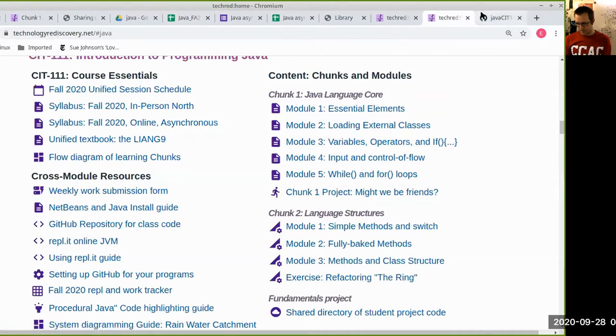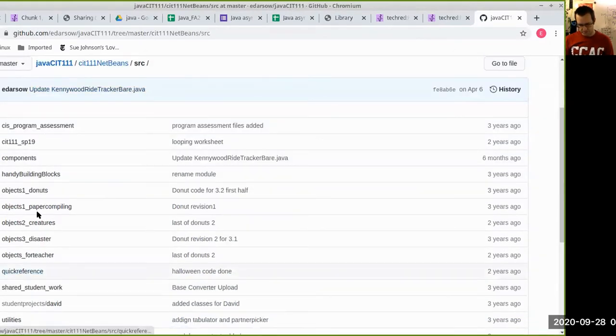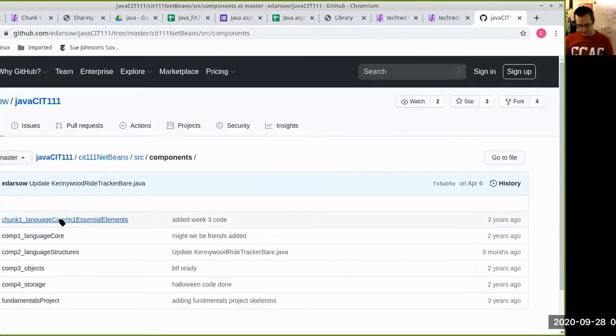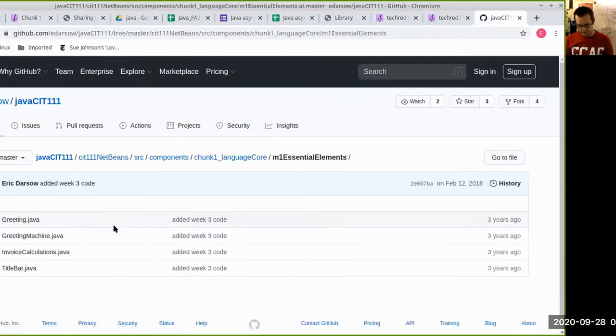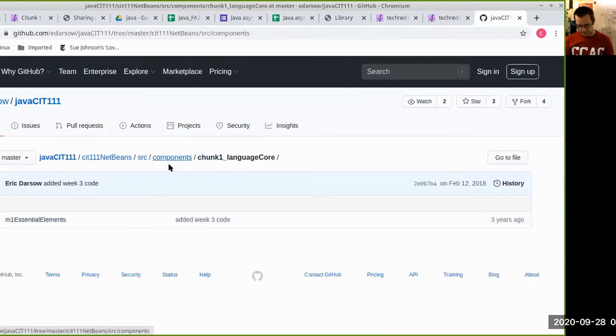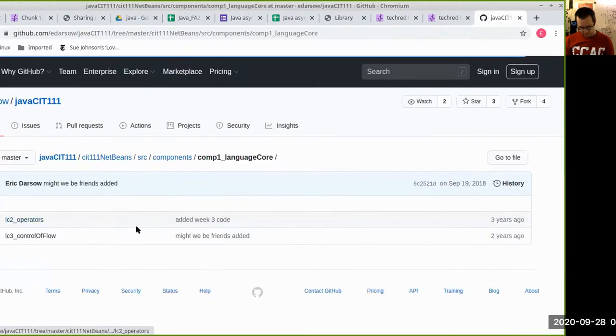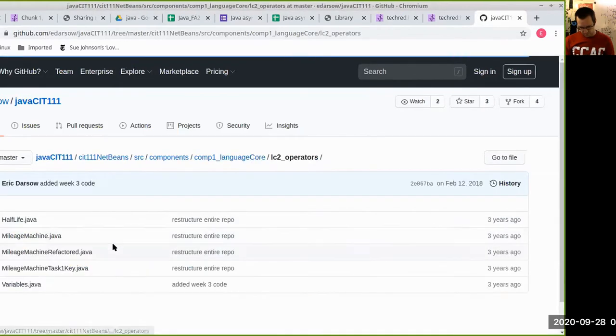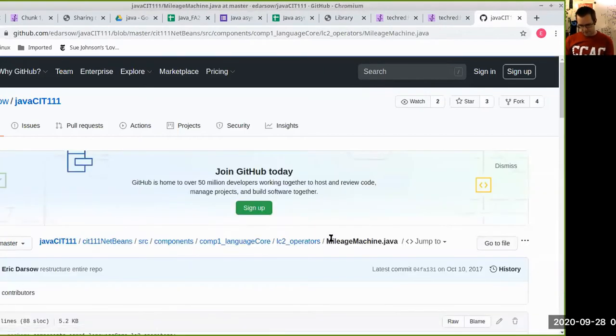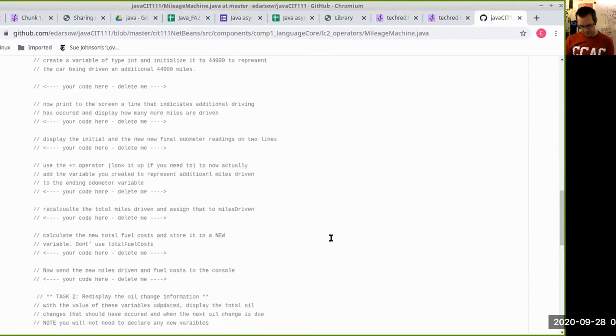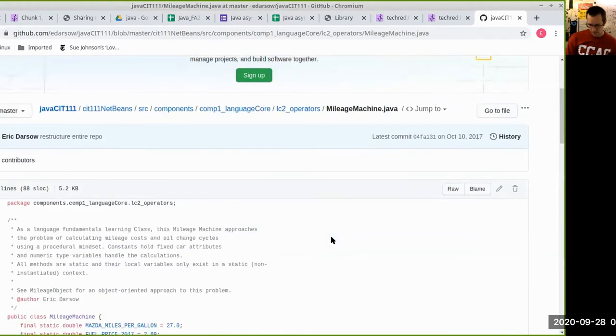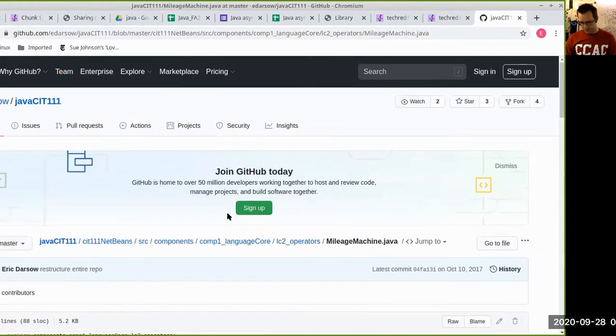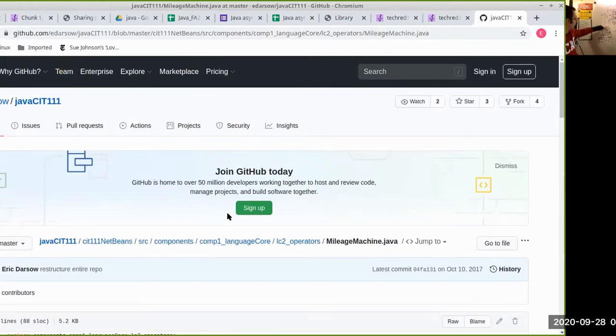I get a github.com repository called Java CIT 111. And you'll see that I have directories that are organized by components. So all of our chunks are in components and then the various module files are inside each individual chunk. So it looks like I had a couple of adjustments. I'm looking for operators, mileage machine. Okay. So what we can see here is I can navigate down into the particular files and then I can actually see the source code here. Now this is not connected to a Java compiler. So if we want to interact with these files,